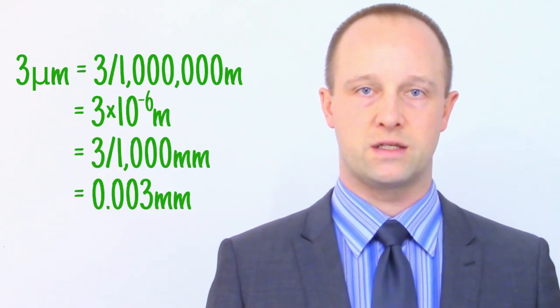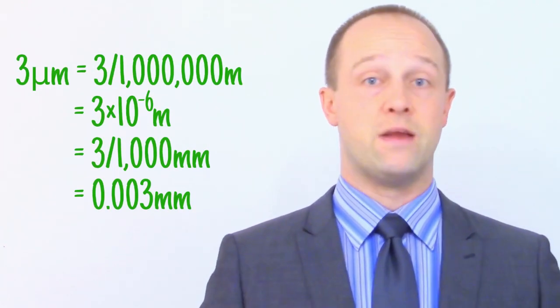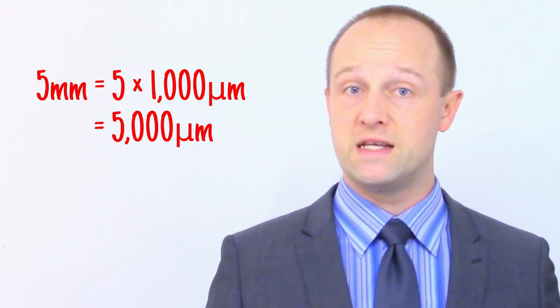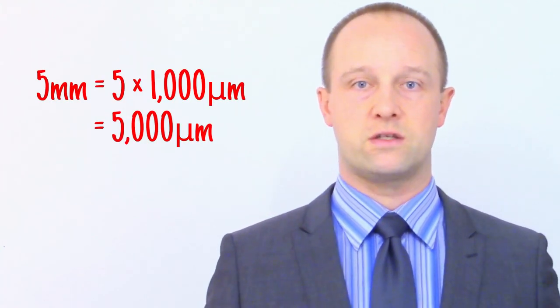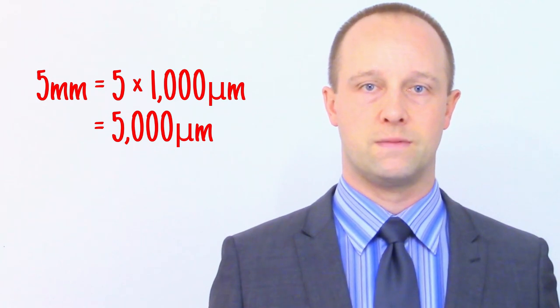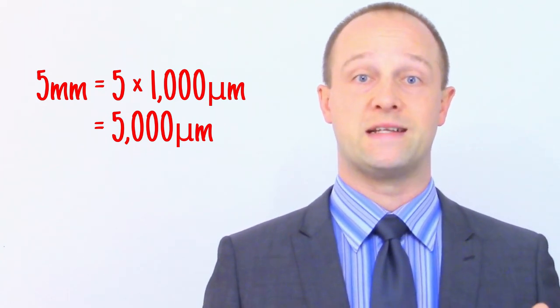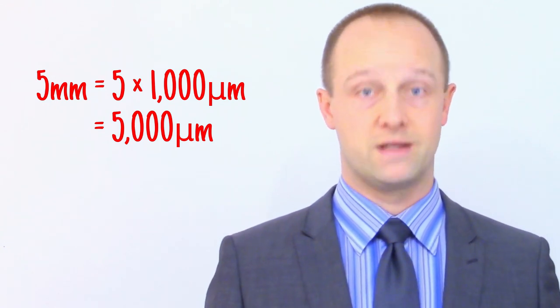Micrometres are smaller. So, if we had a three micrometre object, and we needed to convert that to the bigger millimetres, we'd divide by a thousand. Going the other way, if we wanted to convert millimetres into the smaller micrometres, it would be just like writing, say, five metres in millimetres. We'd just multiply by a thousand. Just take a moment to ask yourself, should this number be getting bigger or smaller, and you'll be fine.